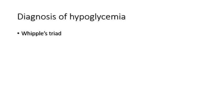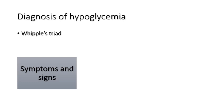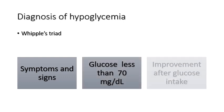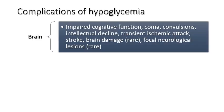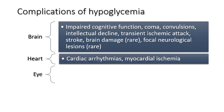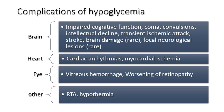The diagnosis of hypoglycemia is defined by the presence of Whipple's triad: symptoms or signs of hypoglycemia, blood glucose less than 70 mg per deciliter, and improvement of symptoms after glucose intake. Complications of untreated hypoglycemia include brain complications — focal neurological deficit, stroke, or transient ischemic attack; cardiac complications — arrhythmia from prolonged QT interval and sometimes myocardial ischemia; eye complications — vitreous hemorrhage or worsening retinopathy, which can also occur with rapid blood glucose normalization; and increased risk of road traffic accidents, self-injury, and hypothermia.